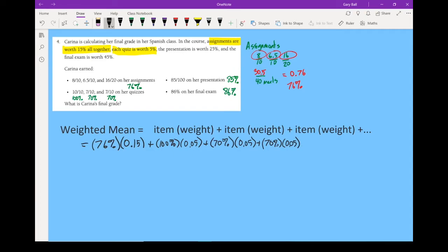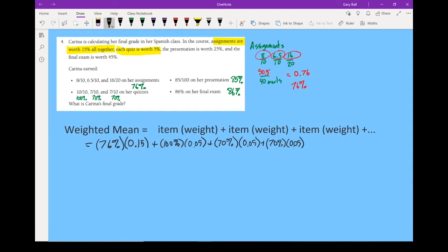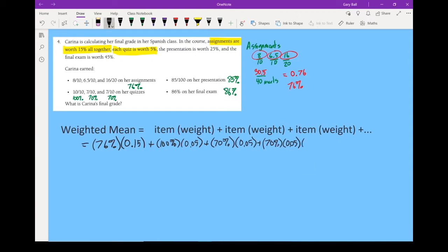Next step is her presentation. This is a bigger piece, with a plus sign. This presentation, she got an 85% on. And the weight of that presentation was 25%, so 0.25. And last, but not least, is her final exam, which she got an 86%. And it has a weight of 45%, so 0.45.